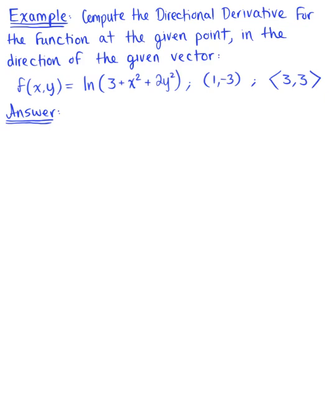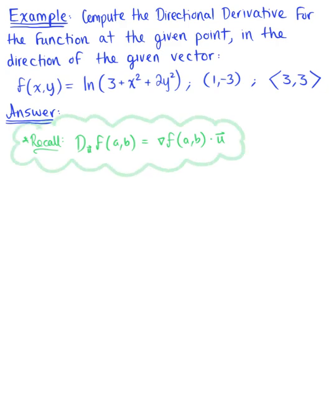Compute the directional derivative for the function at the given point in the direction of the given vector. To get started, let's recall how we compute the directional derivative. The directional derivative is defined as capital D sub vector u, for that unit vector, of the function f at a point (a, b). This is the directional derivative in R2, defined as the dot product of the gradient vector at the point (a, b) dotted with the unit vector u.